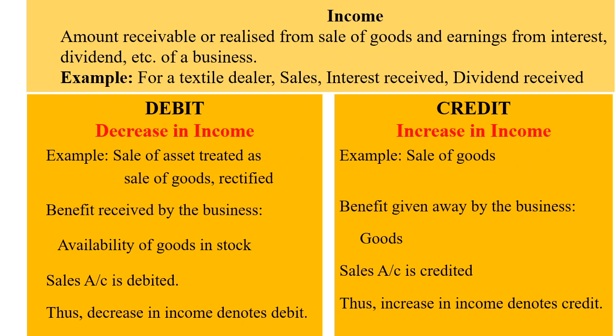Income: the amount receivable or realized from sale of goods and earnings from interest, dividend, etc. of a business is known as income. Example for a textile dealer: sales, interest received, dividend received. Debit denotes decrease in income. Example: sale of asset treated as sale of goods, now rectified. The benefit received by the business is the availability of goods in stock, and so the sales account is debited. Thus, decrease in income denotes debit.